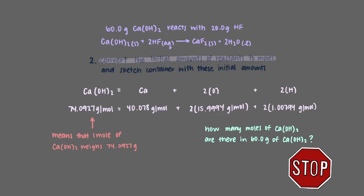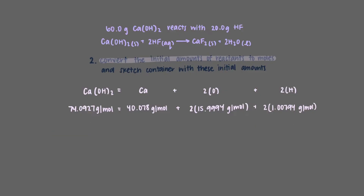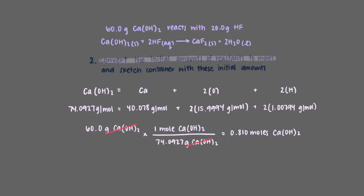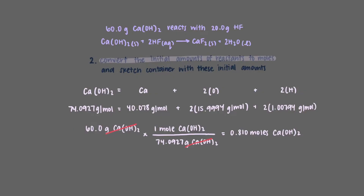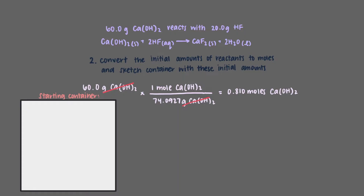How many moles of calcium hydroxide are there in 60 grams of calcium hydroxide? We start with the 60 grams of calcium hydroxide — what we have — and then we use the molar mass to convert to moles. We get 0.810 moles of calcium hydroxide. To help us keep track of our work, let's sketch a container and put our 0.810 moles of calcium hydroxide in the container.